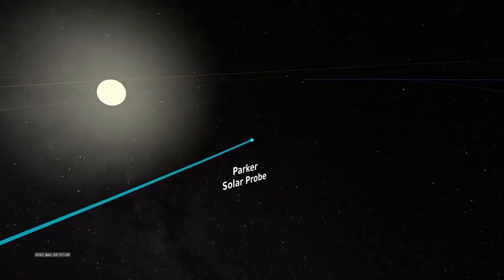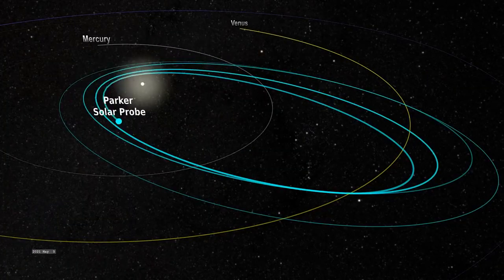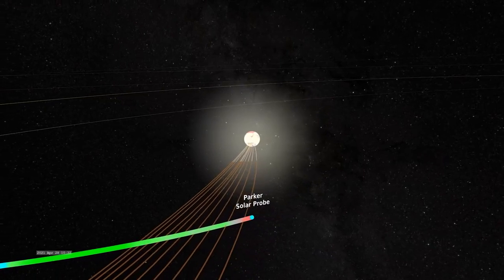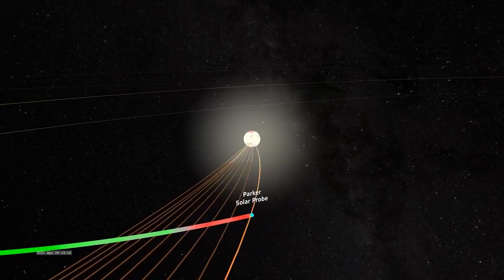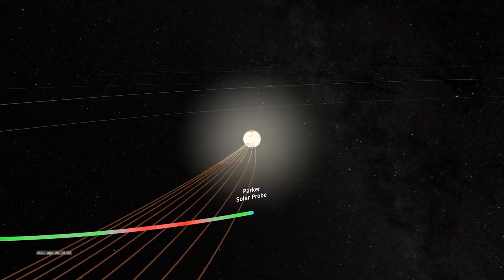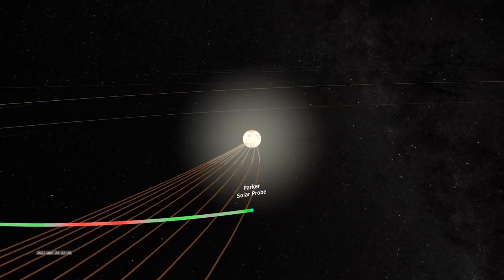Then, in April 2021, during Parker's 8th orbit around the sun, the spacecraft was around 20 solar radii, or 8 million miles from the sun's surface, when it crossed into the corona. This is a huge milestone. It took us over six decades to come to this point.